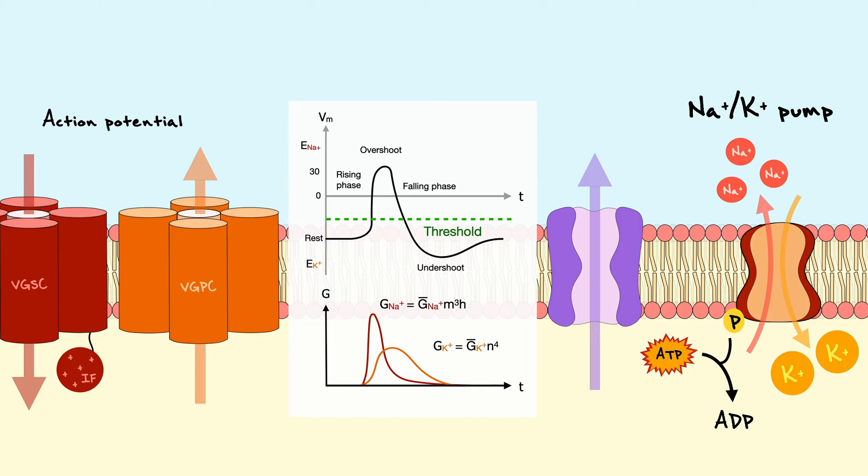Hence, below threshold, the net current is outward, but at the threshold value, which is always higher than the resting membrane potential, the net current from sodium, potassium and the leaked channels is inward, which allows more voltage-gated sodium channels to open and depolarize the membrane up to the overshoot.